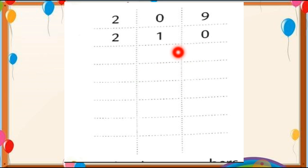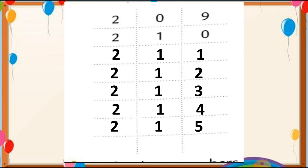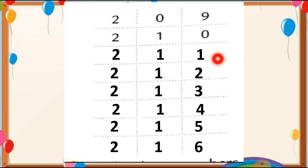This is also your textbook exercise. Now you know how to write these numbers: 209, 210, 211, 212, 213, 214, 215, 216. This way we have to complete this table. Just tally this because it is your textbook exercise, students.